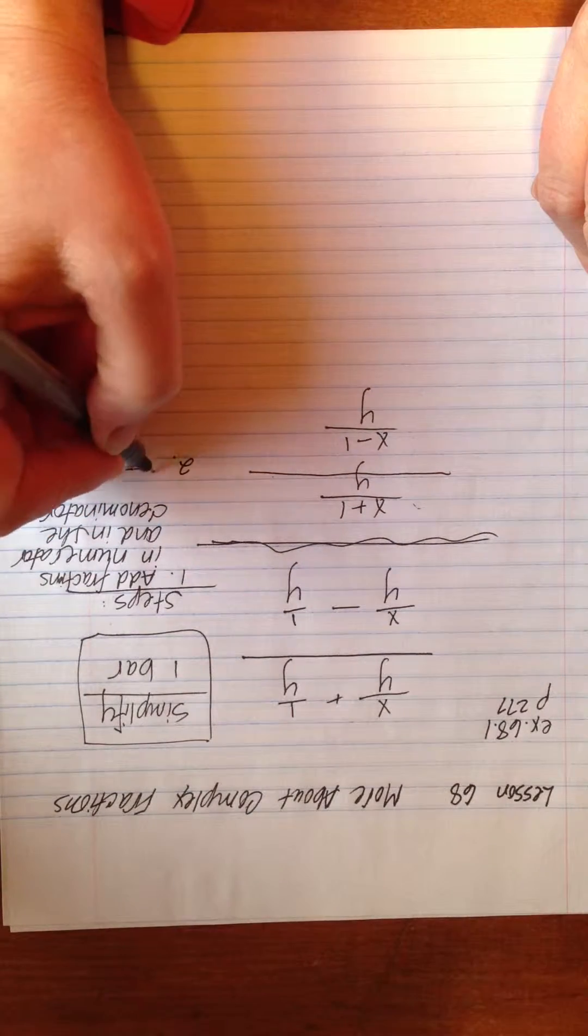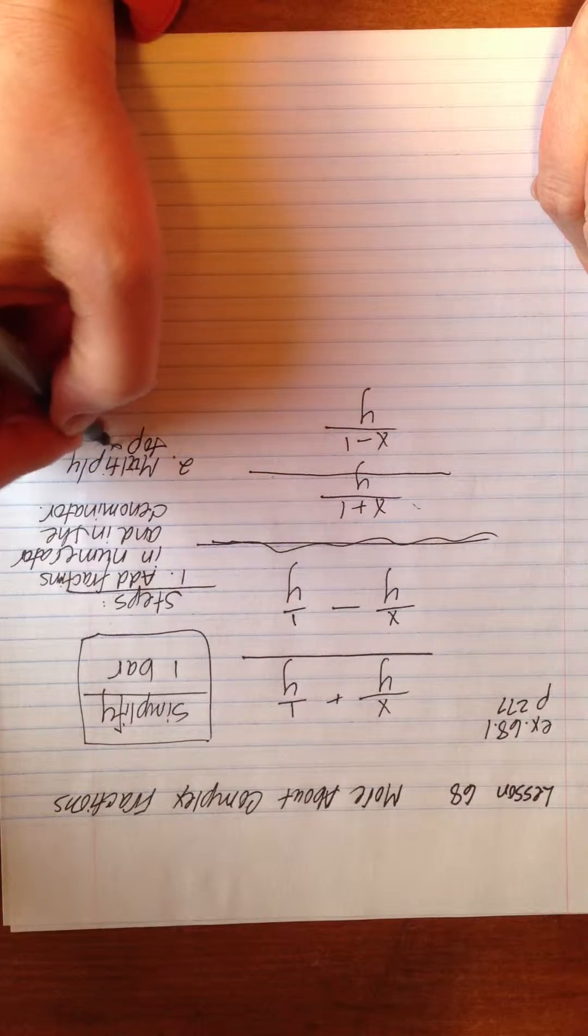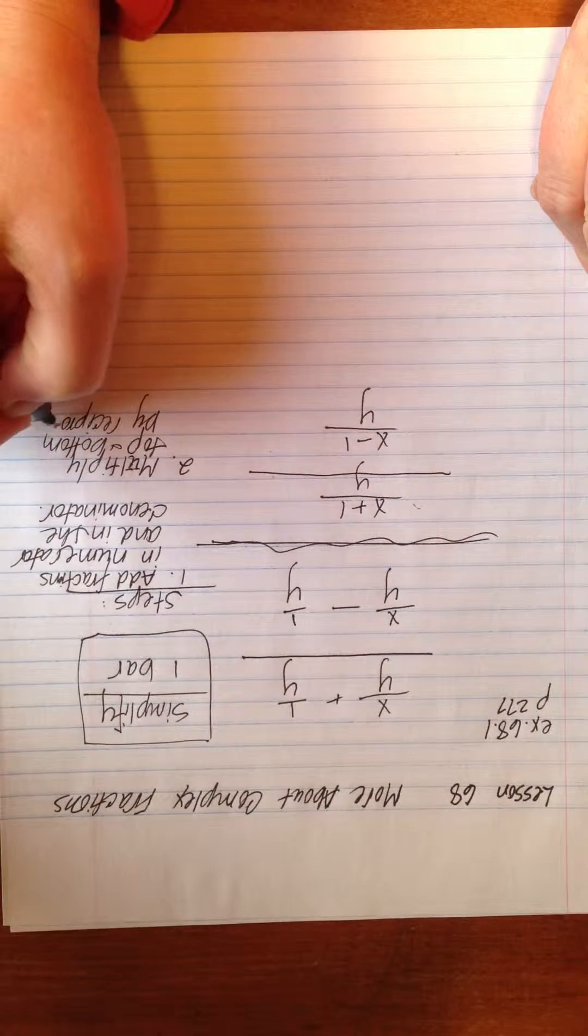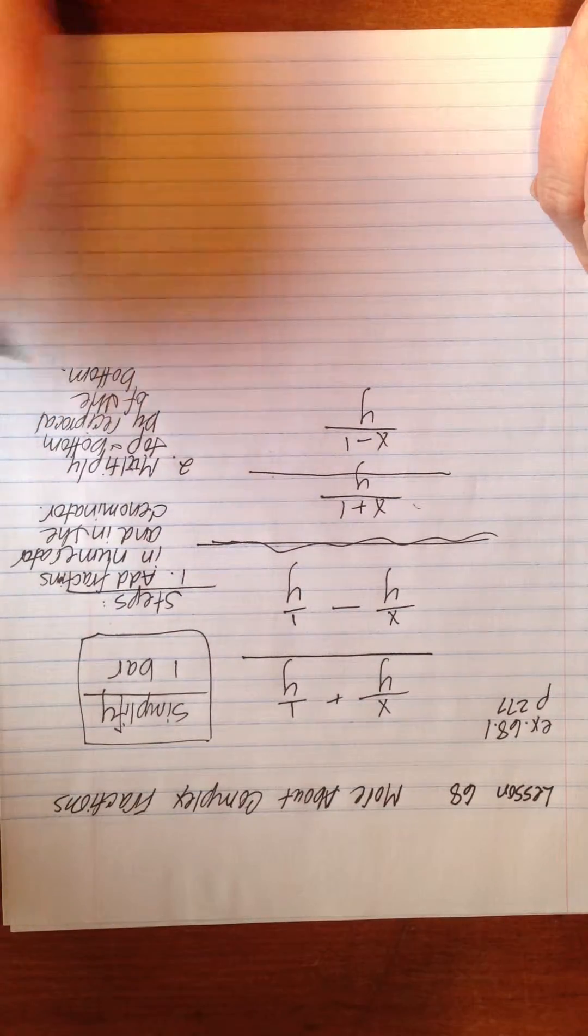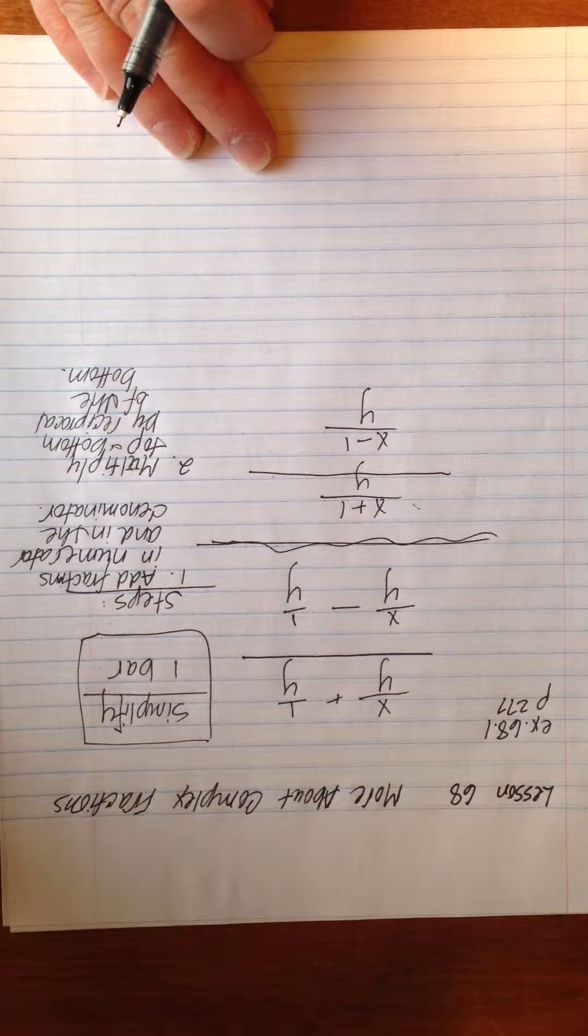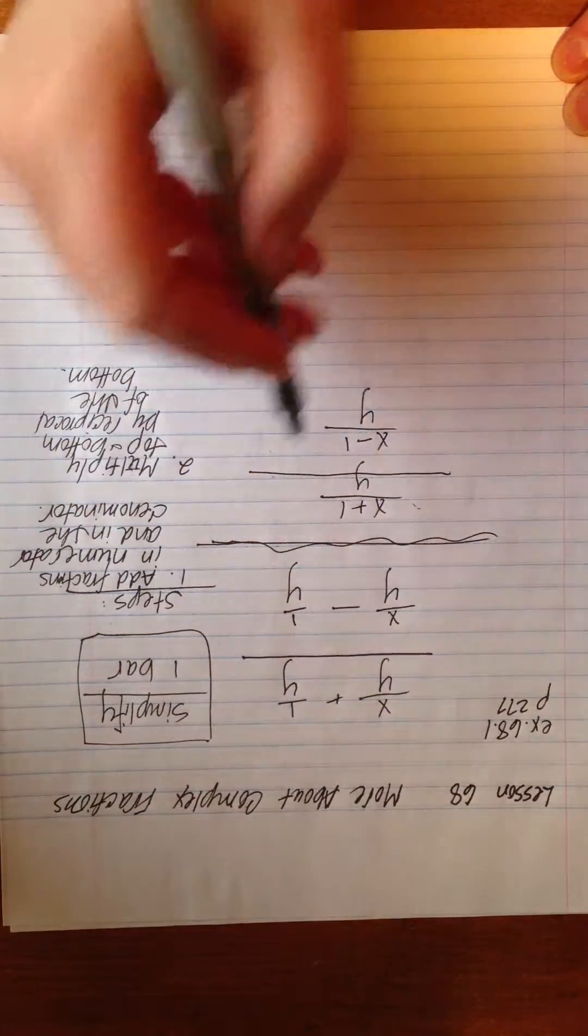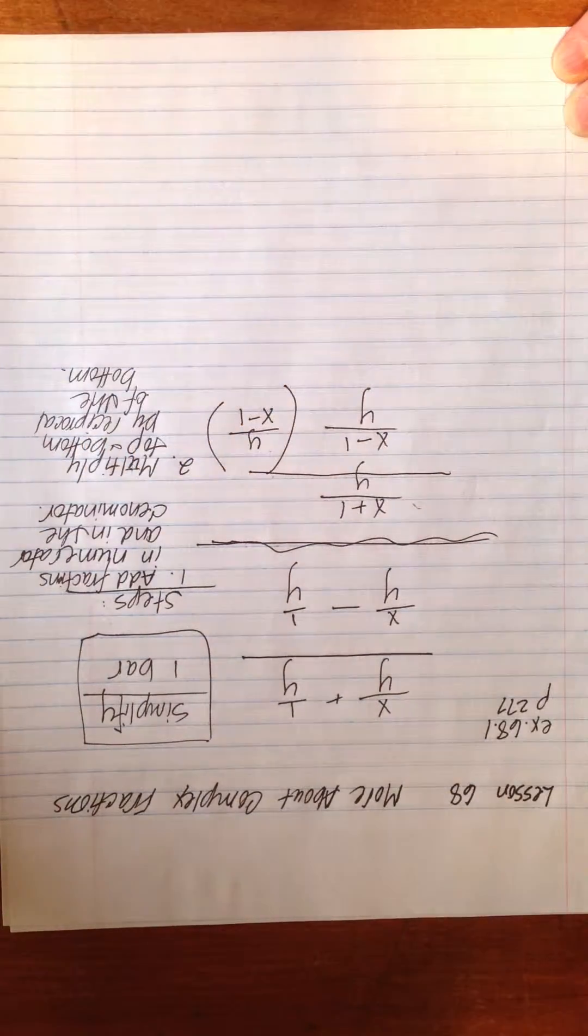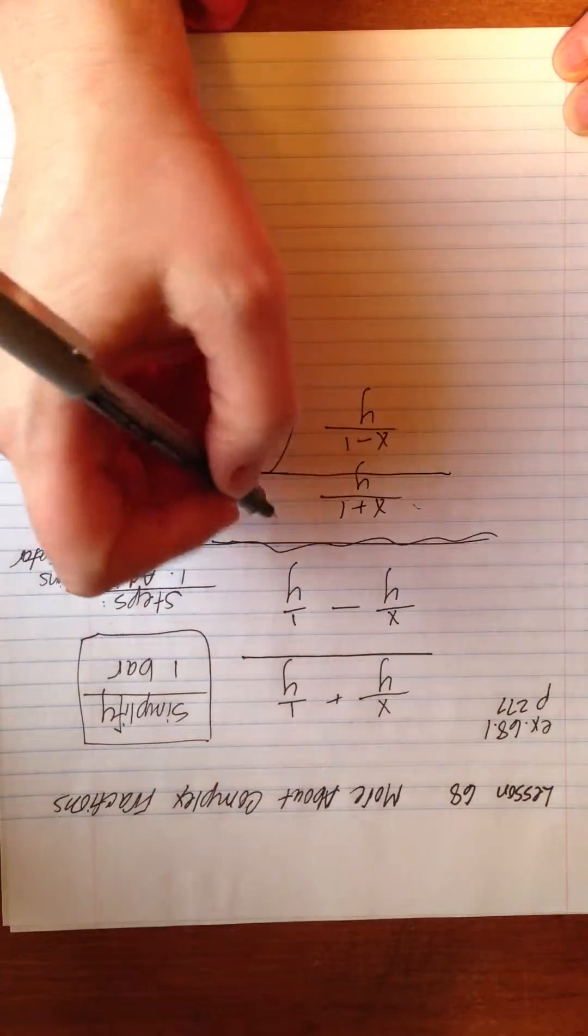Second step, multiply top and bottom by the reciprocal of the bottom. Remember, our goal is to always turn our denominator into a 1. And the tool we use, the little trick we use, is we multiply by the reciprocal. So the reciprocal of our denominator is going to be y over x minus 1. I'm going to put that in parentheses so you can see that we're multiplying. So that will cancel out and become 1. But if we do it to the bottom, we have to do it to the top. That's our hannah cranny rule.